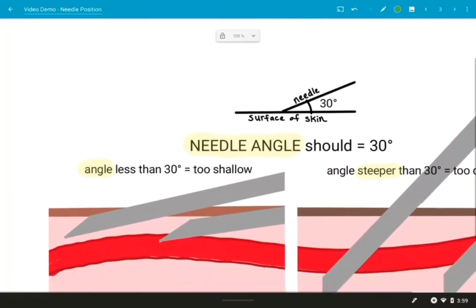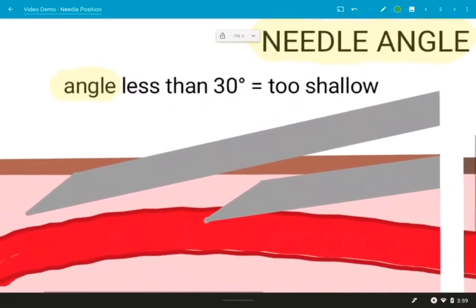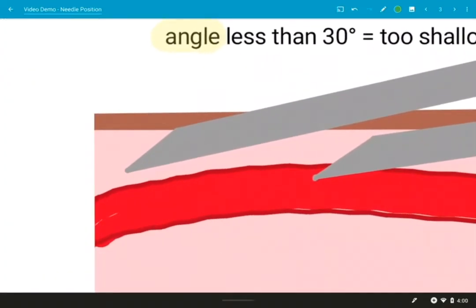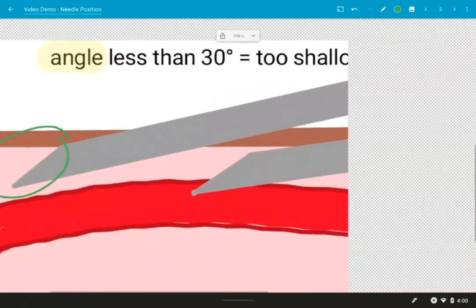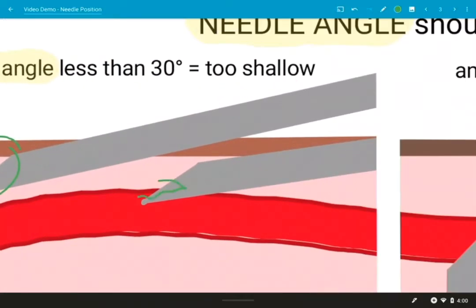Just a note that some veins are going to require a more flat approach than others. But you really want to make sure that you have that angle correct. Inserting a needle at less than 30 degrees is going to make it too shallow. So we run into the same problem where you miss the vein or you create a hematoma.